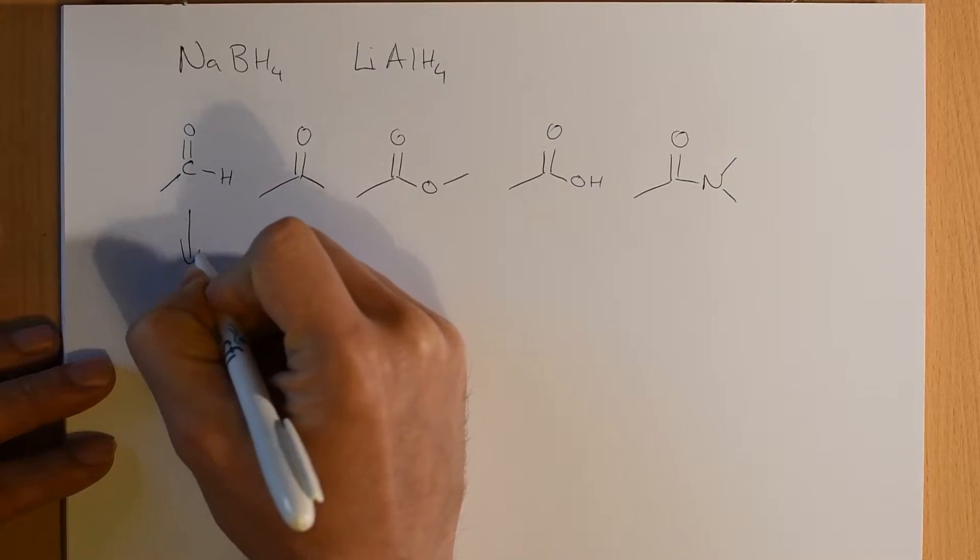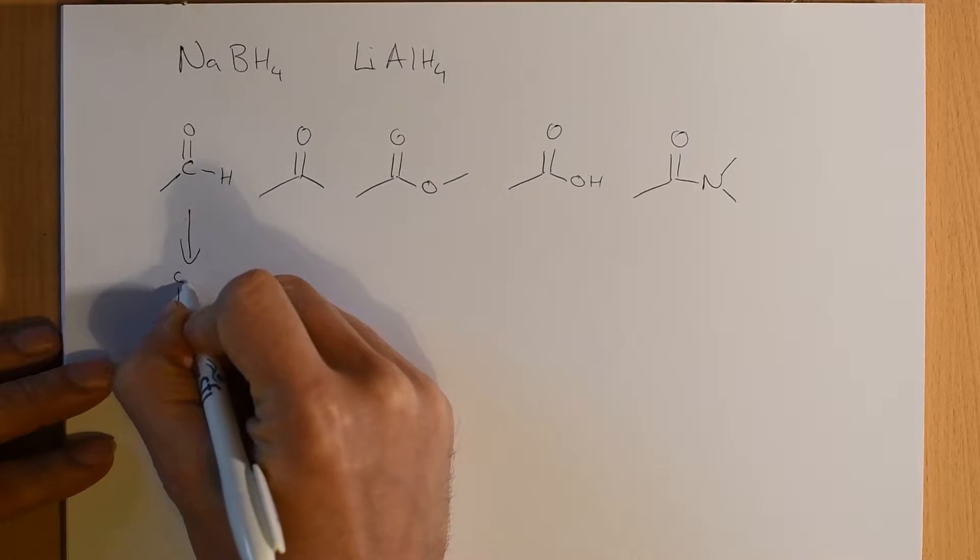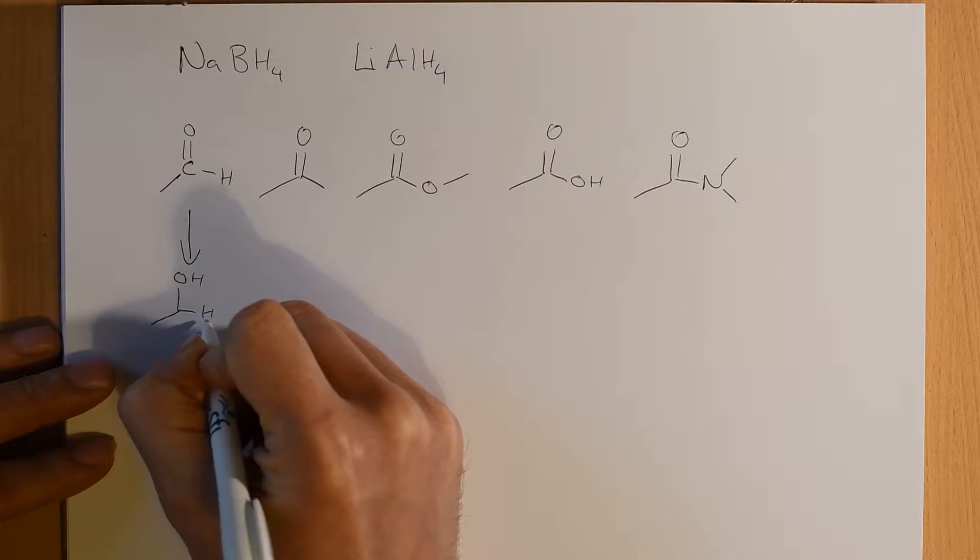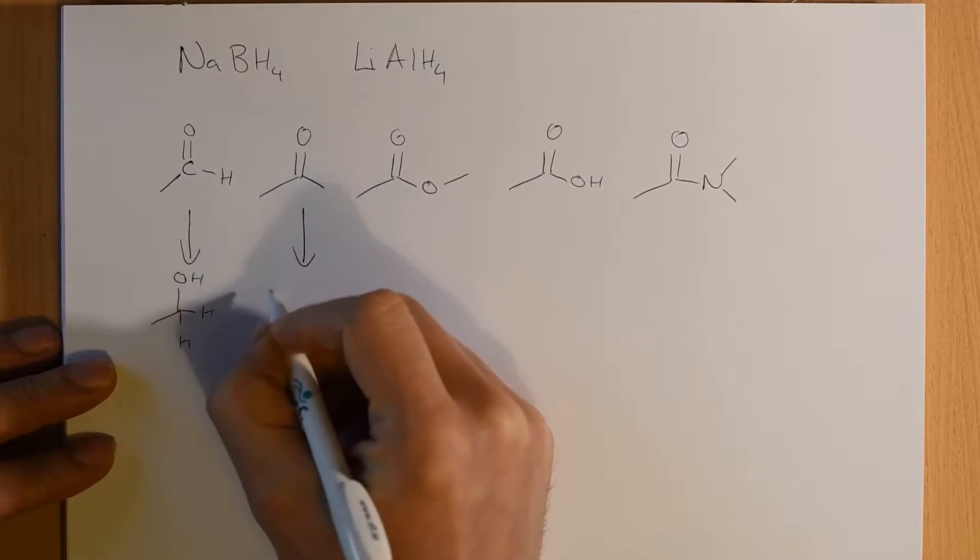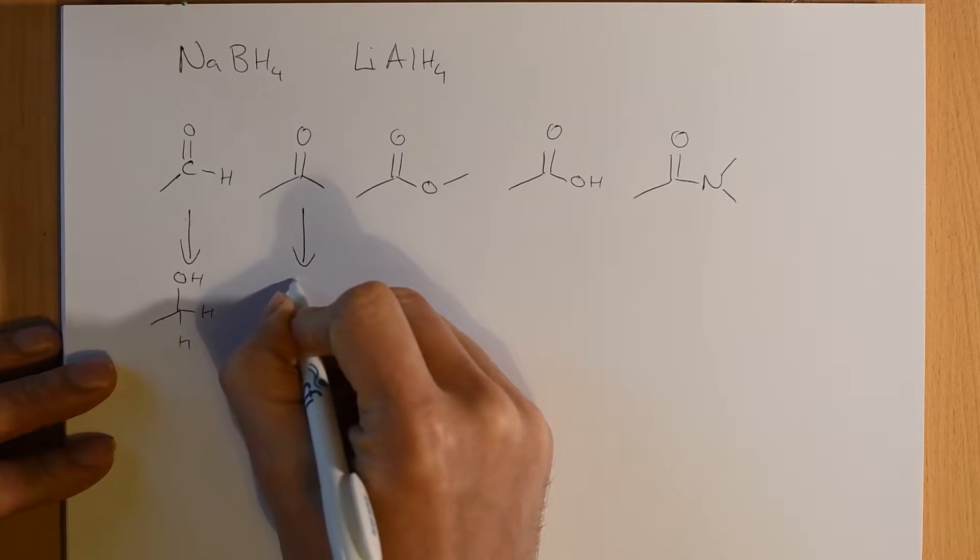So either a single carbon oxygen bond in these four cases, or a single carbon nitrogen bond. If you reduce an aldehyde, you are going to get a primary alcohol. If you reduce a ketone, you are going to get a secondary alcohol.